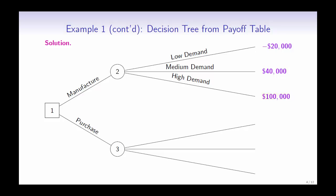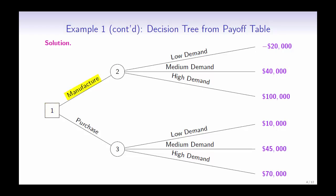If the company decides to purchase the component, then we can see the projected payoff when it is in low demand, medium demand, and high demand. Recall that a square represents a decision node. So node 1 shows the decision to either manufacture or purchase the component. Nodes 2 and 3 show the outcomes when there is a low demand, medium demand, and high demand.